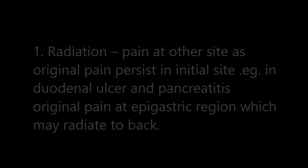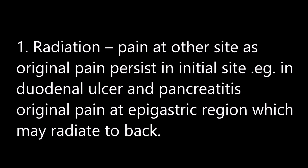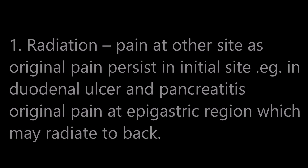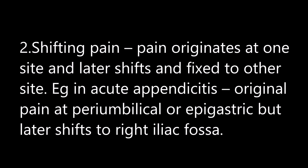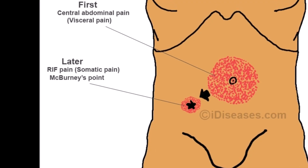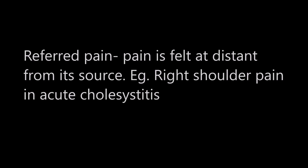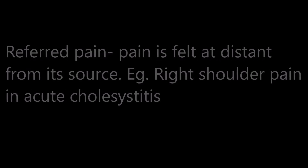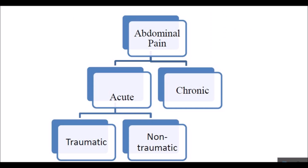Movement of pain includes radiation, shifting pain, and referred pain. In radiation, pain is felt at another site as an extension of the original site — example: in duodenal ulcer and pancreatitis, pain originates at the epigastric region and may radiate to the back. Shifting pain originates at one side and later shifts and fixes to another side — example: in acute appendicitis, pain starts at periumbilical or epigastric region but later shifts to the right iliac fossa. Referred pain is felt at a distance from its source — example: right shoulder pain in acute cholecystitis.